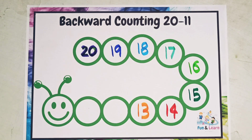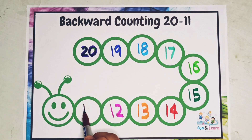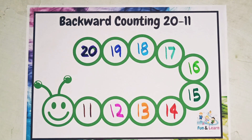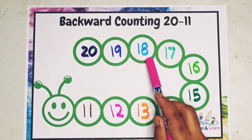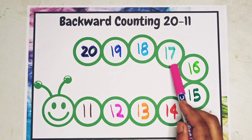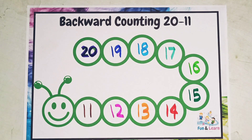Then comes 12, and the last number is 11. So when we count backwards from 20 to 11, it will be: 20, 19, 18, 17, 16, 15, 14, 13, 12, and 11.